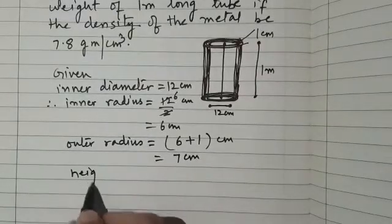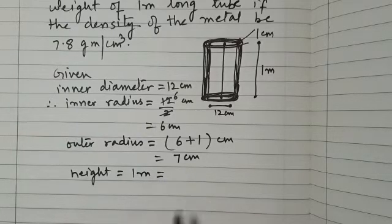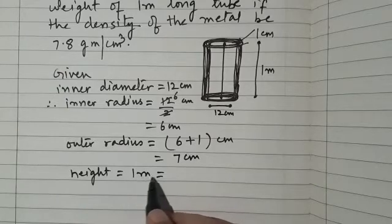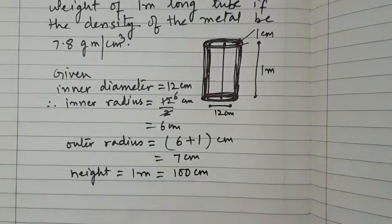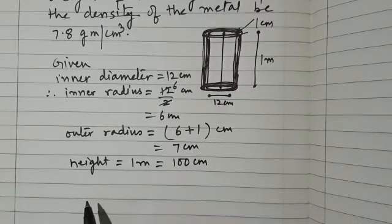Now height is given to be 1 meter. We are going to use the same units so we can convert 1 meter into centimeters. So 1 meter is 100 centimeters.